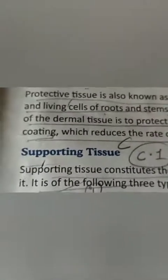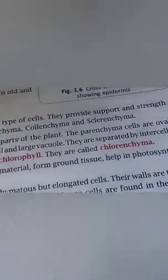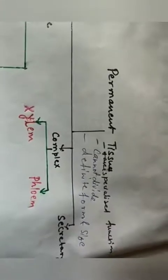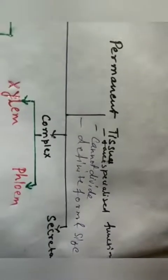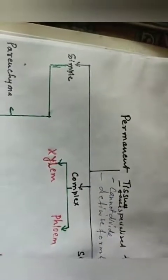These cells do not divide because they became differentiated. They may be alive or may be dead, and have different shapes. Based on their structure and functions they are divided into two main types: simple permanent tissue and complex permanent tissue, and secretory tissue.